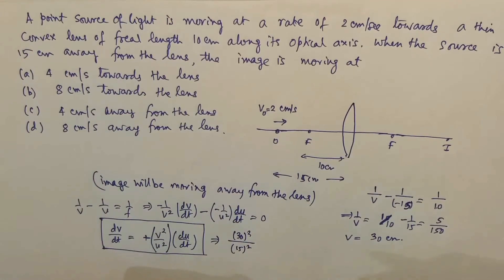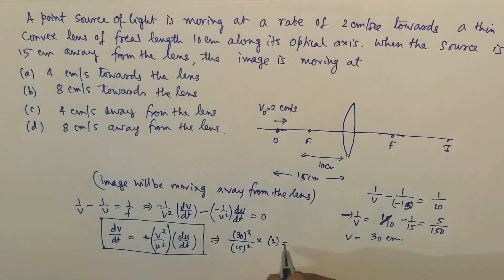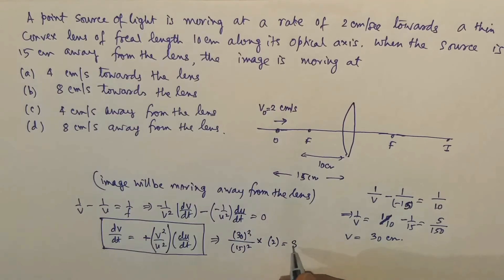And du/dt, just put the value 2. So how much is it? 15 × 2 is 30, 2² is 4, 4 × 2 is 8 centimeters per second. So this is the speed of the image.